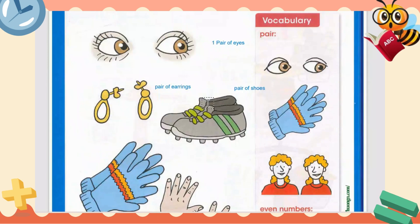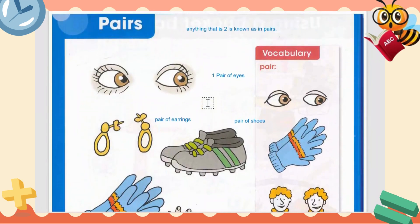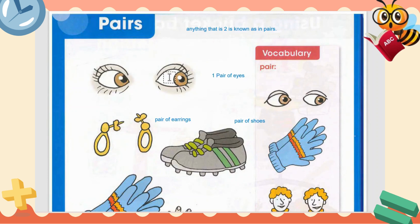Hi guys, welcome back to my channel. We are going to start our new chapter of Cambridge Grade 1 Maths, and that is about pairs. What is a pair? Anything that is two is known as a pair. Anything that is similar and cannot exist alone is known as a pair. For example, your eyes — you have two eyes, they are the same and cannot exist alone. Have you seen a person with one eye? No. So that is known as a pair.